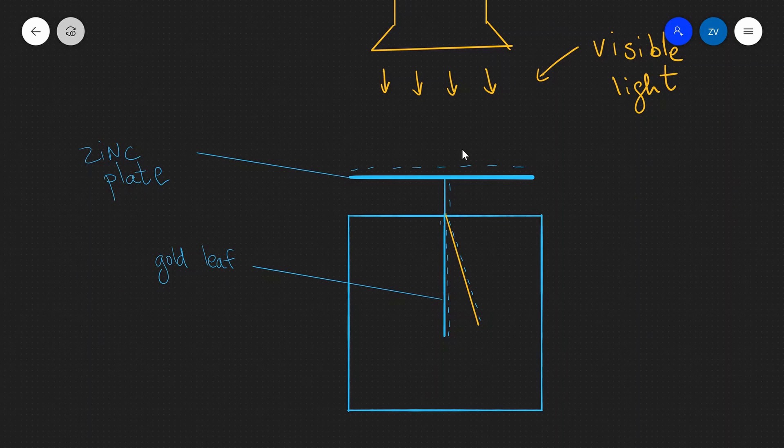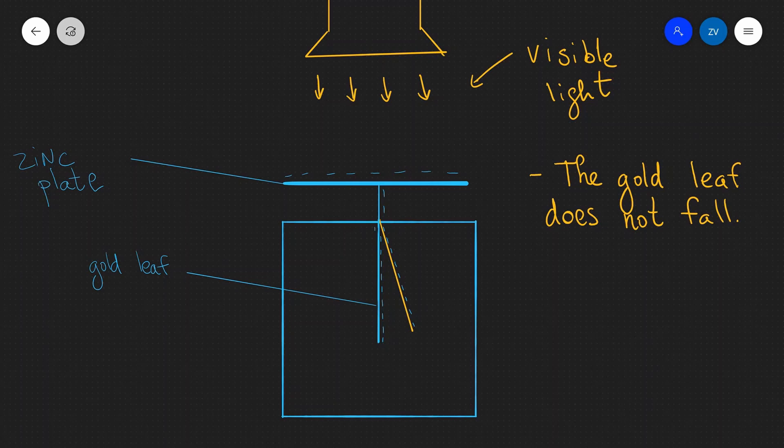This means that the visible light does not have enough energy to overcome the work function to knock these electrons off from the zinc plate. So if we use visible light, the gold leaf position remains unchanged. Now something that is really interesting is that classical theory suggests that if I was to really increase the intensity of the visible light, so for example if I was to double the number of photons or increase them by a substantial margin, then I might be able to eject some of the electrons off from the zinc plate. In practice, the intensity of the visible light does not seem to affect the experiment at all. No matter what the intensity of the visible light is, I cannot get an electron to be released from the zinc plate.